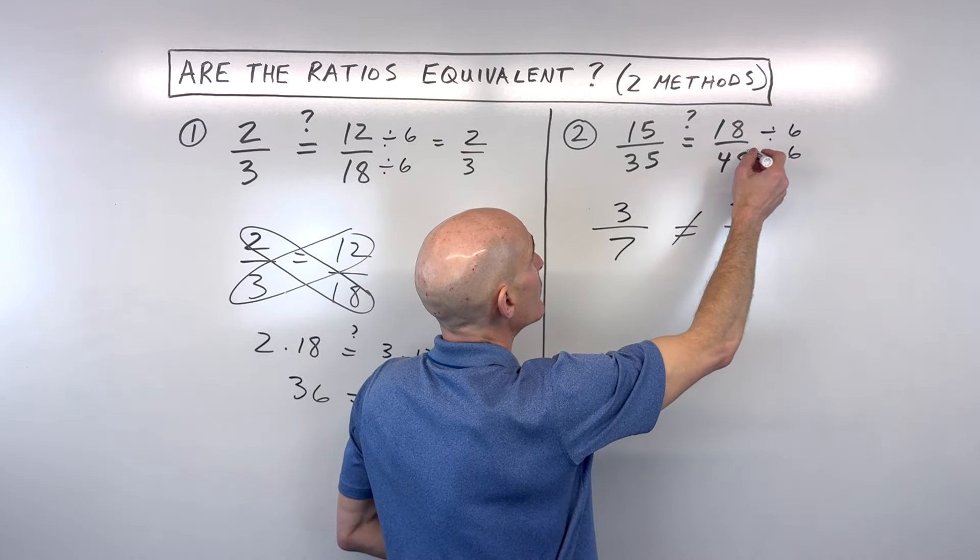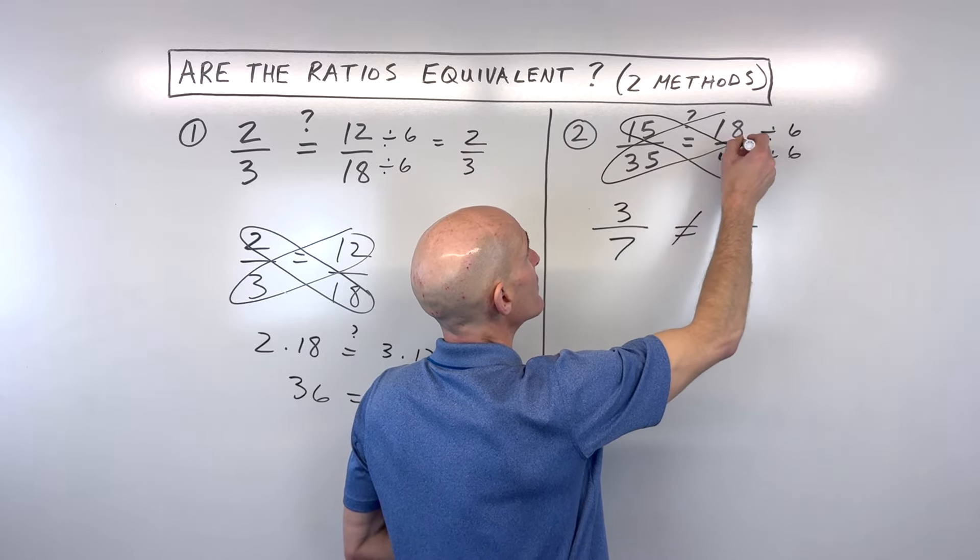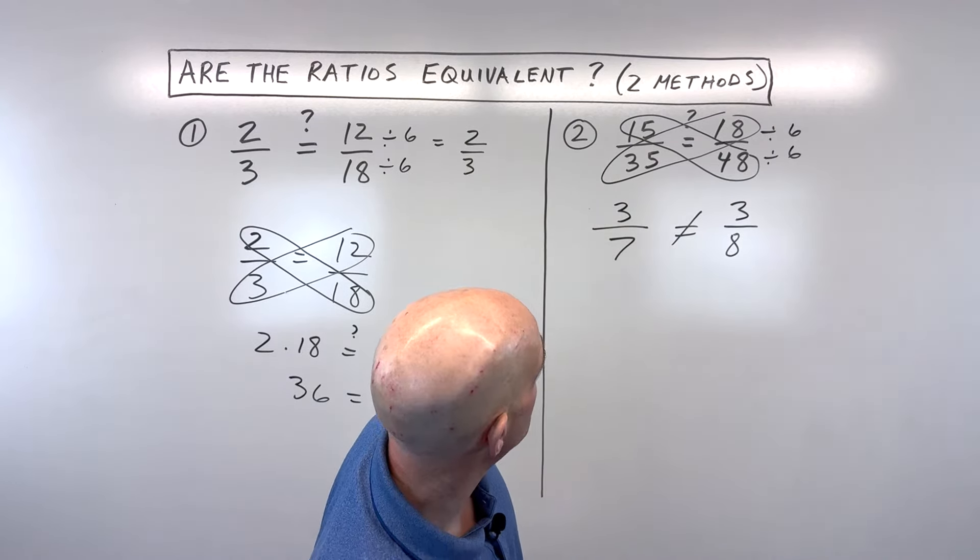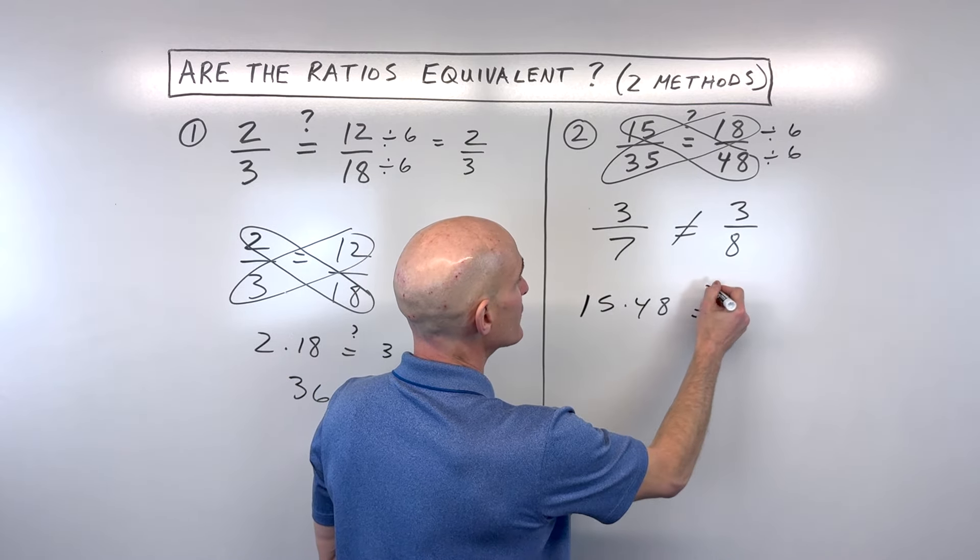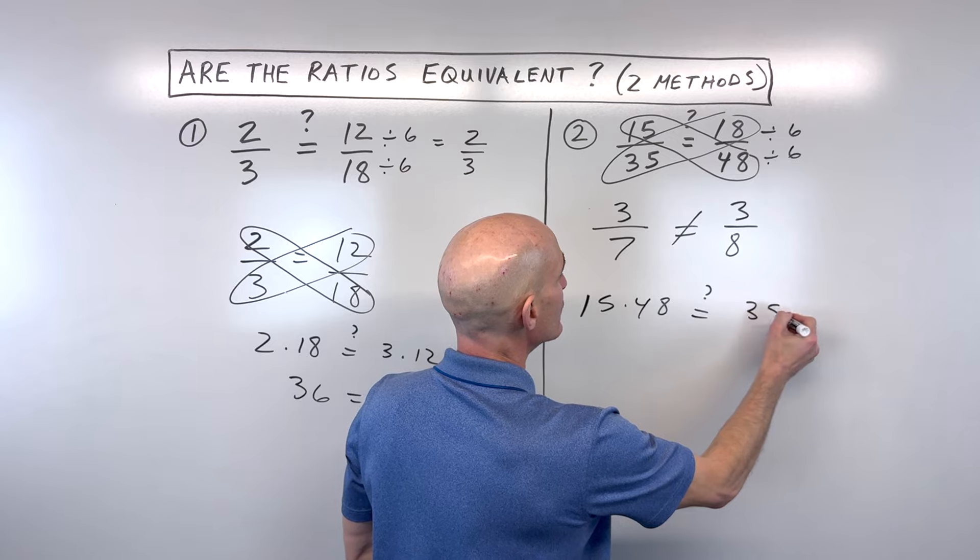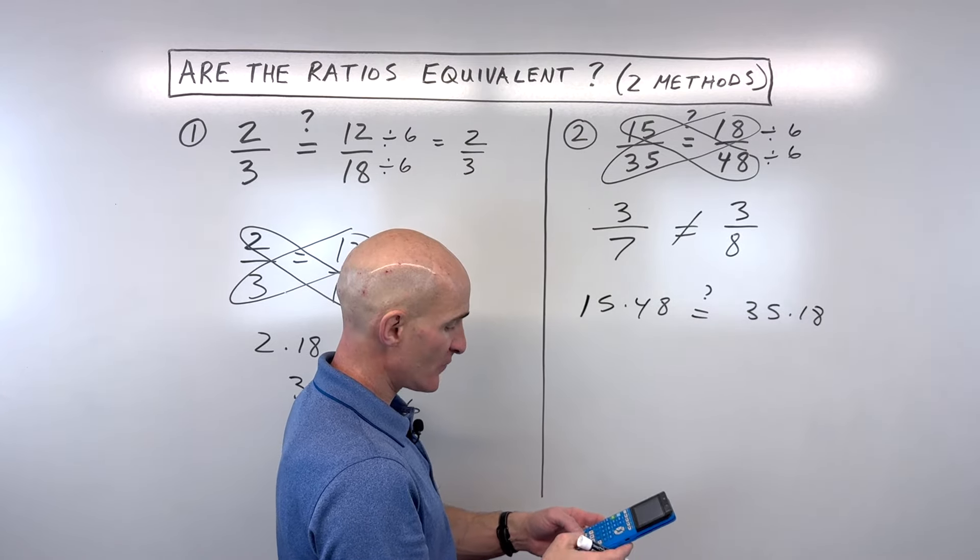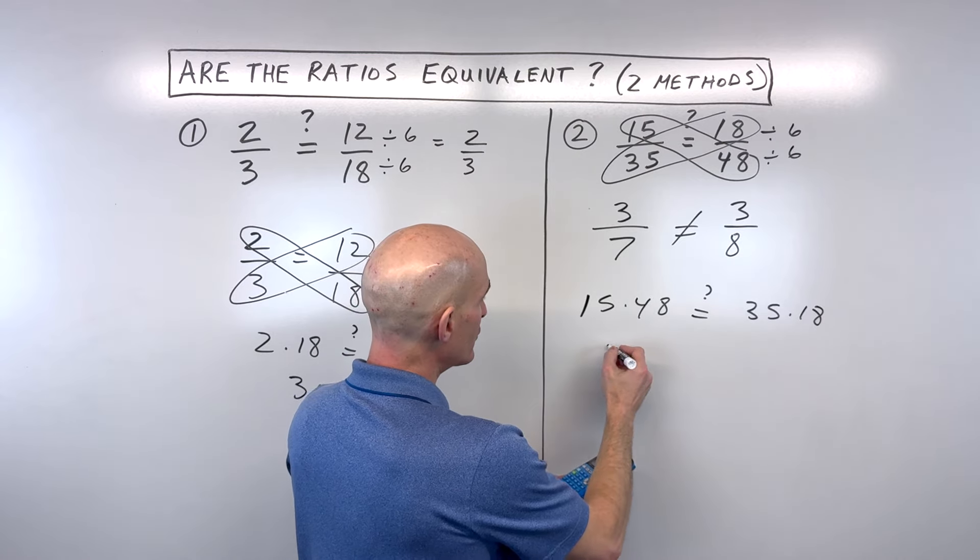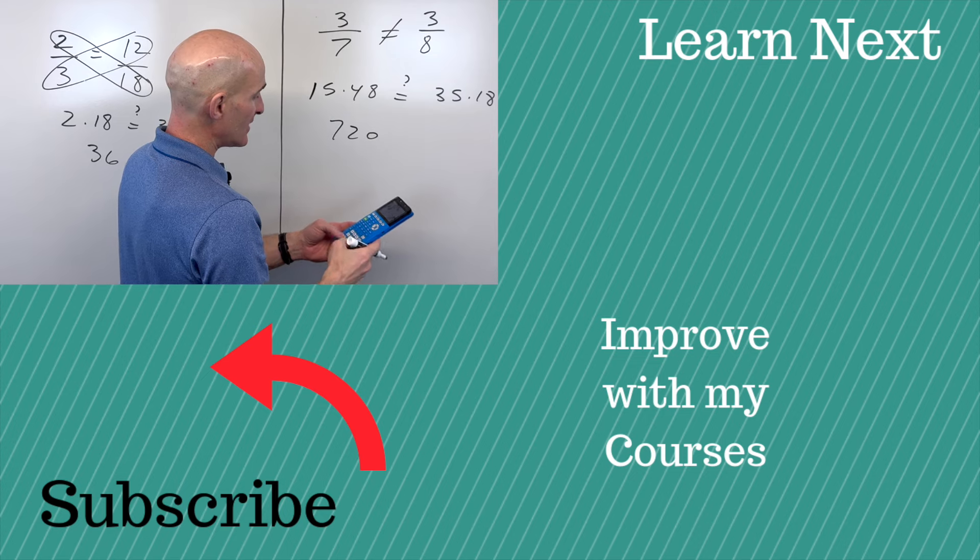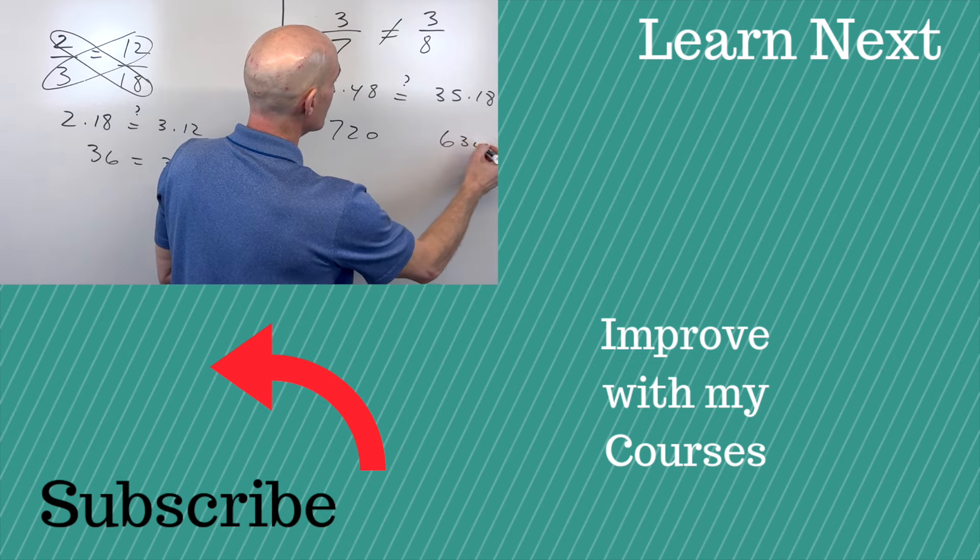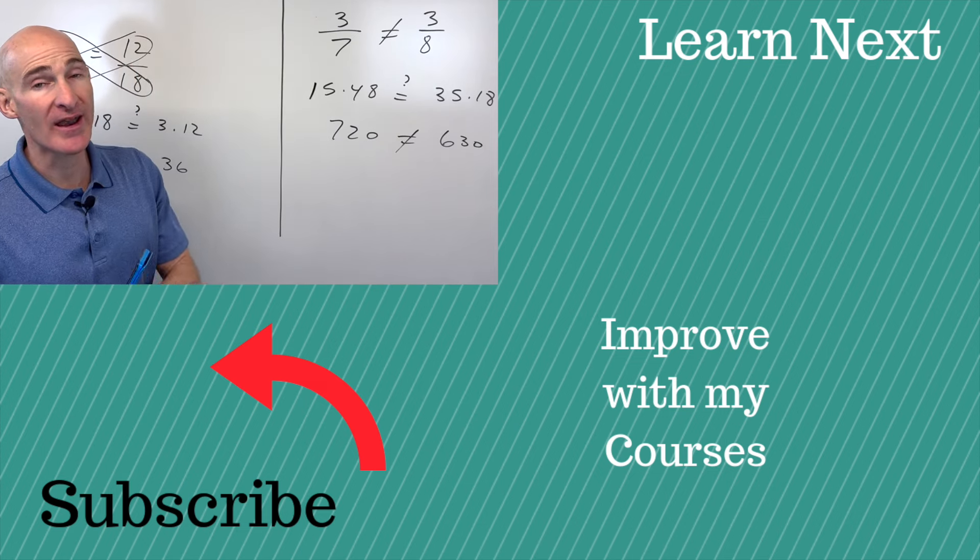But the other method, if you don't like that reducing method, is to go ahead and use this cross product method. So I'm going to go to the calculator on this one, but we've got 15 times 48. We're asking ourselves, is that the same as 35 times 18? So let's see, 15 times 48 is 720. And we're wondering, is that the same thing as 35 times 18, which is 630? You can see these are not the same, which tells us that these ratios are not equivalent.